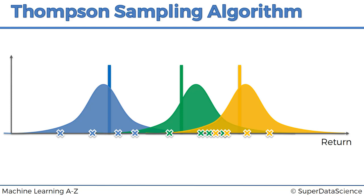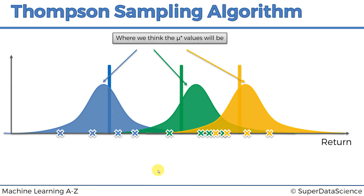It's very important to understand this. We're creating an auxiliary mechanism to solve the problem — not recreating the machines themselves, but recreating our perception of where those machines' expected values could be. Looking at the blue machine: we got four values and constructed a distribution showing where mu-star might be. The algorithm can't say exactly where it is, so it says there's a high likelihood it's here, but it could be anywhere in this blue space — the likelihood dropping as you move away.